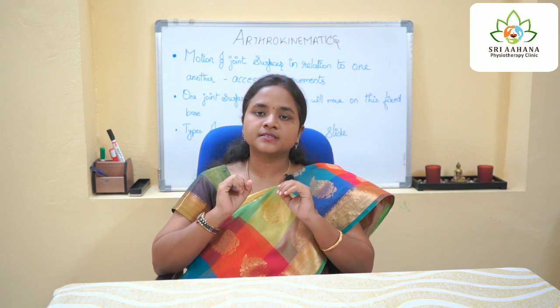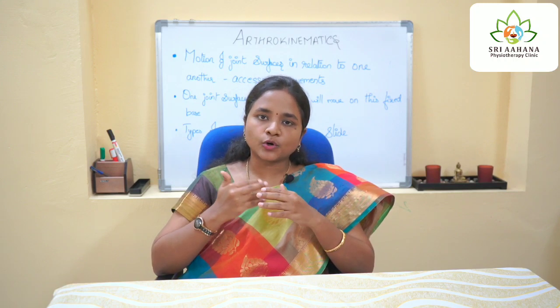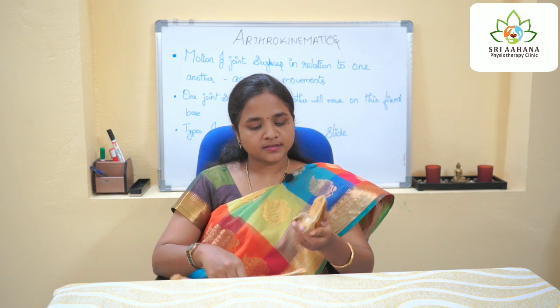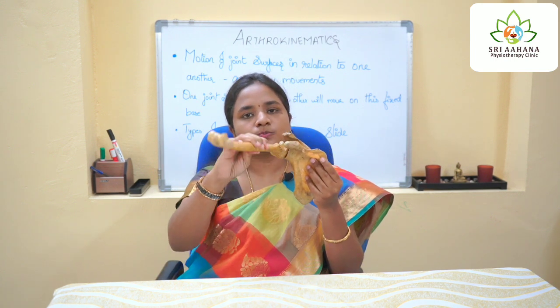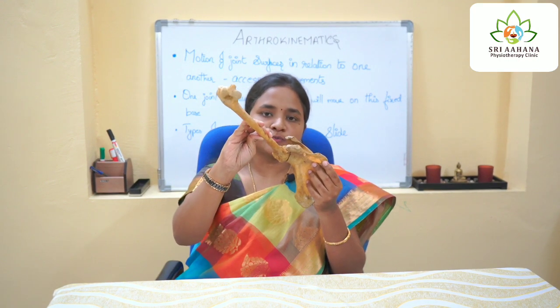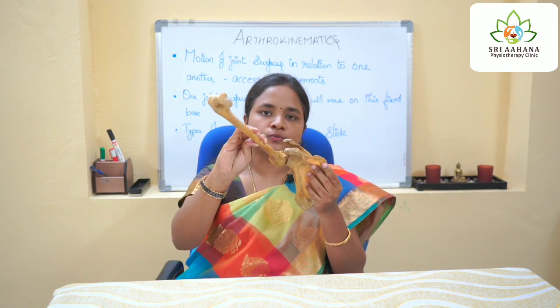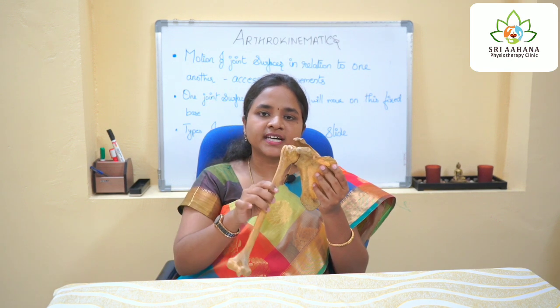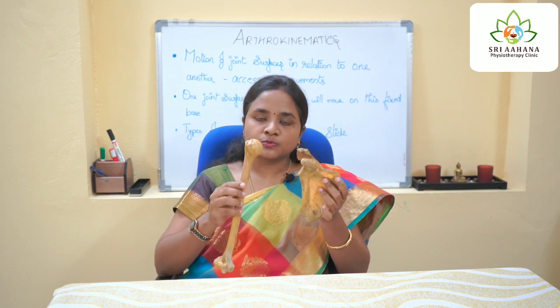A best example of this kind of movement would be the scapula and humeral movement. When I put the shoulder into flexion, the shaft moves upward while the head of the humerus glides downward. This is what happens when a convex surface moves on a stable concave surface.